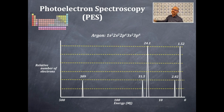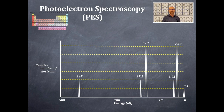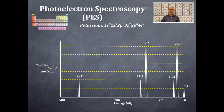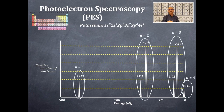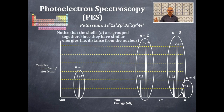After argon comes potassium. The 1s2 electrons have shifted all the way to 347 megajoules. The 1s2 group, the 2s and 2p group, and the 3s and 3p group are all tightly packed, and then the 4s1 is all by itself at 0.42 megajoules. Potassium is in group one — it removes one electron relatively easily. You can see n=1, 2, 3, and 4 all grouped together.